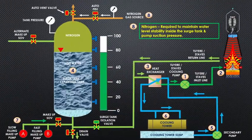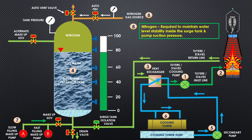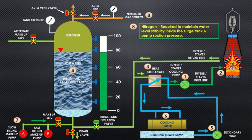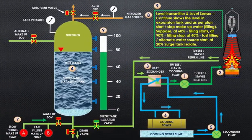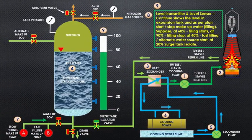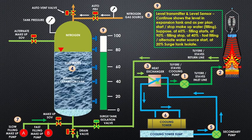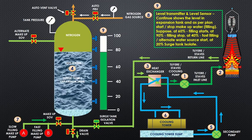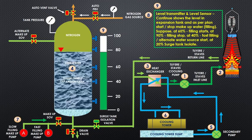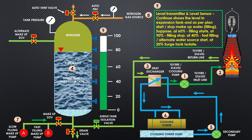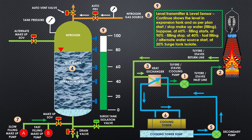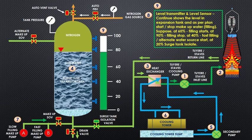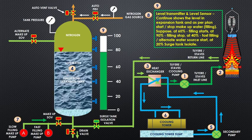Nitrogen is required to maintain water level stability inside the surge tank and pump suction pressure. Level transmitter and level sensor continuously show the level in expansion tank and as per plan start or stop makeup water filling. Suppose at 60% filling starts, at 90% filling stops, at 40% fast filling or alternate water source starts, at 20% surge tank isolates.